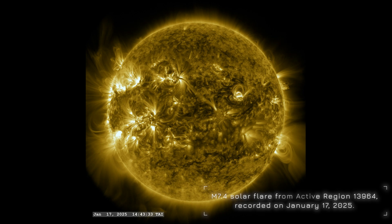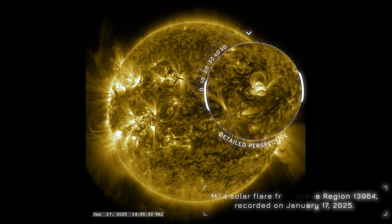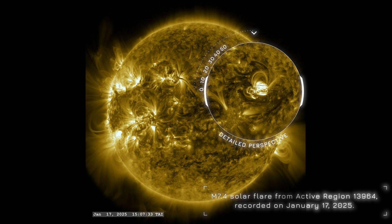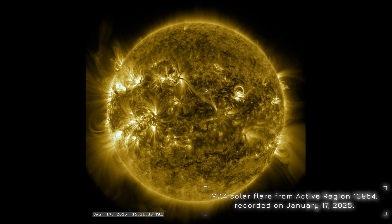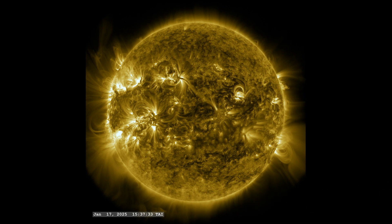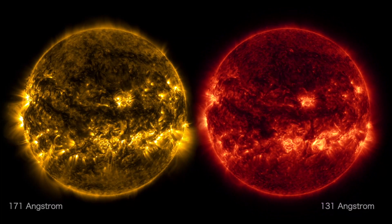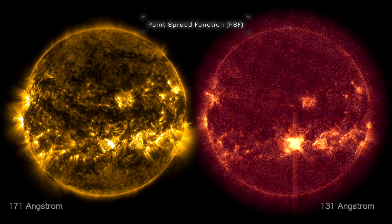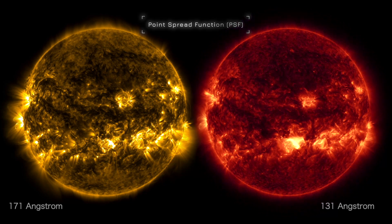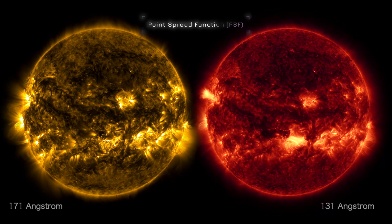This active region, located in the sun's upper right quadrant, rapidly developed a complex magnetic structure leading to significant solar activity. Before we explore the visualizations, it's essential to understand the point spread function, or PSF, in imaging systems like telescopes.